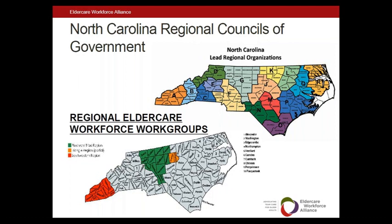You can see that the top map shows all 16 regions broken out, whereas the bottom shows where our coalition is currently working. The template for this regional work was modified from work already taking place in the southwestern region of North Carolina, where organizations were trying to fill open positions in their skilled nursing facilities by working with local community colleges and workforce development groups.